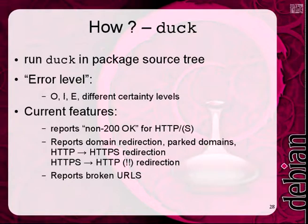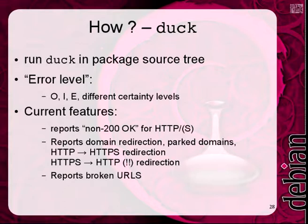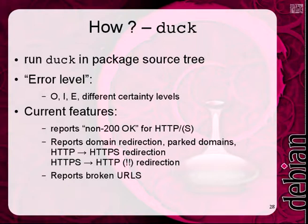The other side is the duck tool itself. As I said, you can just install it with apt-get install duck and run duck in your package source tree. The output is grouped into three error levels: O, I, or E — meaning OK, information, and error. OK is usually not displayed. The informational level means take a look — it might be a false positive or nothing making things break, but might be worth fixing. For example, several homepages are reached only after three redirections, so you might want to enter the final URL directly rather than three hops before.